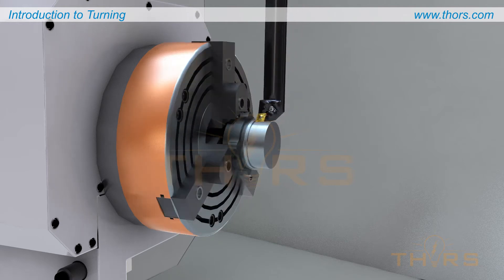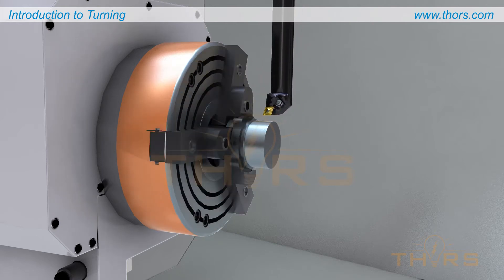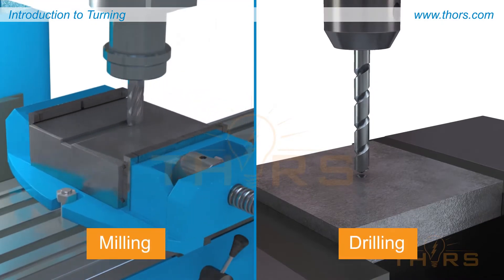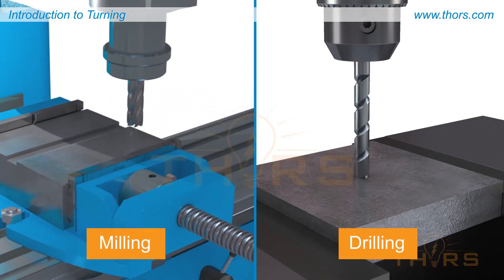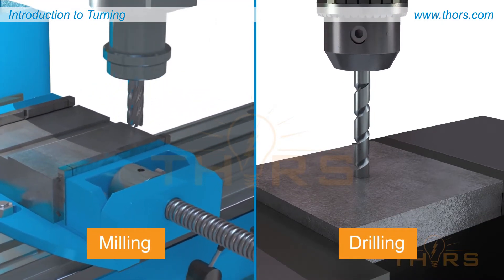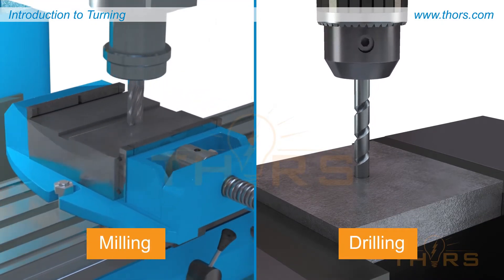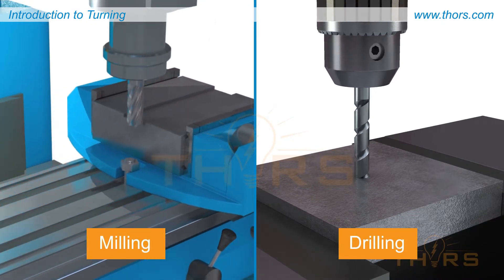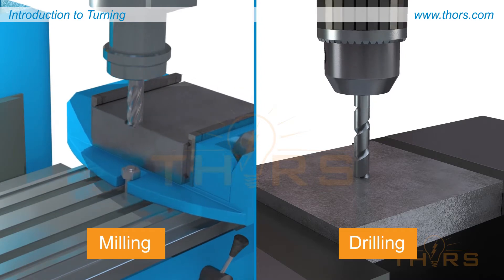In contrast to this, other machining operations such as milling and drilling remove metal while the workpiece is fixed and the tool rotates.